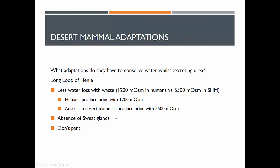Desert mammals generally don't have sweat glands. They are able to regulate their body temperature through different means and adaptations that don't require the secretion of fluid outside the body. They also generally don't pant — dogs panting cool down with their tongue and saliva, wasting a lot of water cooling their bodies down. A lot of Australian desert mammals don't do this.